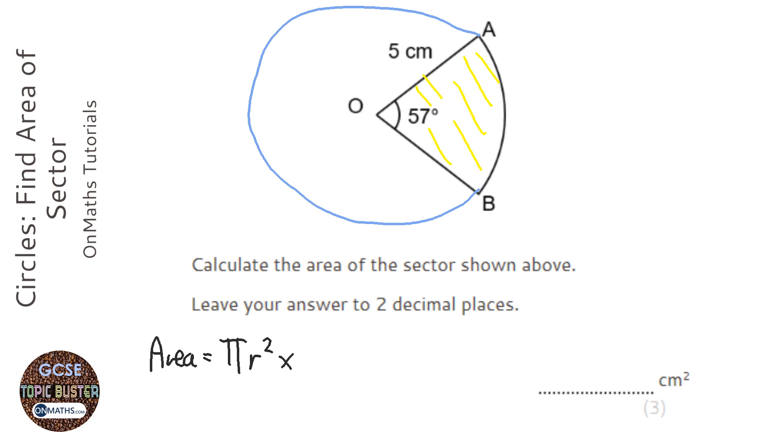We are told that we've got 57 degrees, and we know in total there are 360 degrees. So the fraction is going to be 57 over 360, and it's always over 360 because that's what the angles in the circle are.